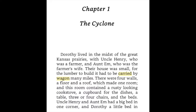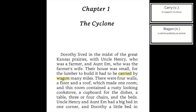Chapter One: The Cyclone. Dorothy lived in the midst of the great Kansas prairies with Uncle Henry, who was a farmer, and Aunt Em, who was the farmer's wife. Their house was small, for the lumber to build it had to be carried by wagon many miles. There were four walls, a floor, and a roof, which made one room, and this room contained a rusty-looking cook stove, a cupboard for the dishes, a table, three or four chairs, and the beds.